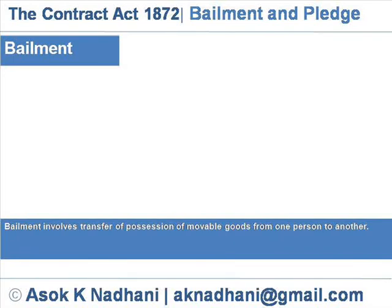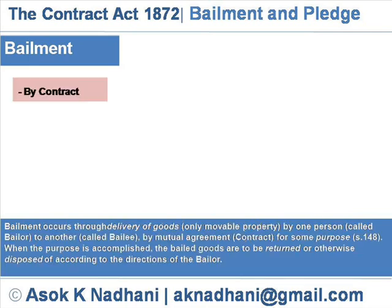Bailment involves transfer of possession of movable goods from one person to another by contract. Bailment occurs through delivery of goods — only movable property — by one person called the bailer to another called the bailee, by mutual agreement, that is, contract, for some purpose. When the purpose is accomplished, the bailed goods are to be returned or otherwise disposed of according to the directions of the bailer.